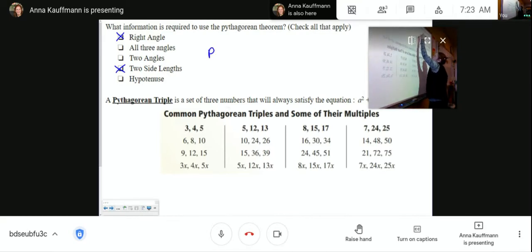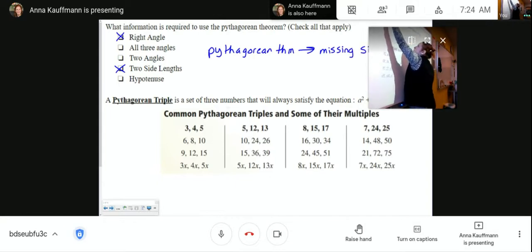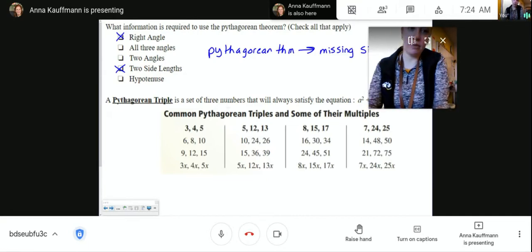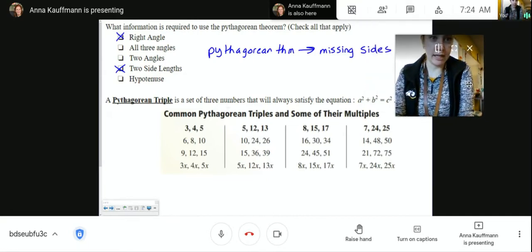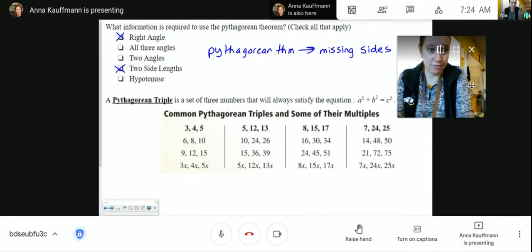The Pythagorean theorem is for finding missing sides only. It has nothing to do with the idea that you're trying to get angles or anything like that. It's for missing sides specifically.